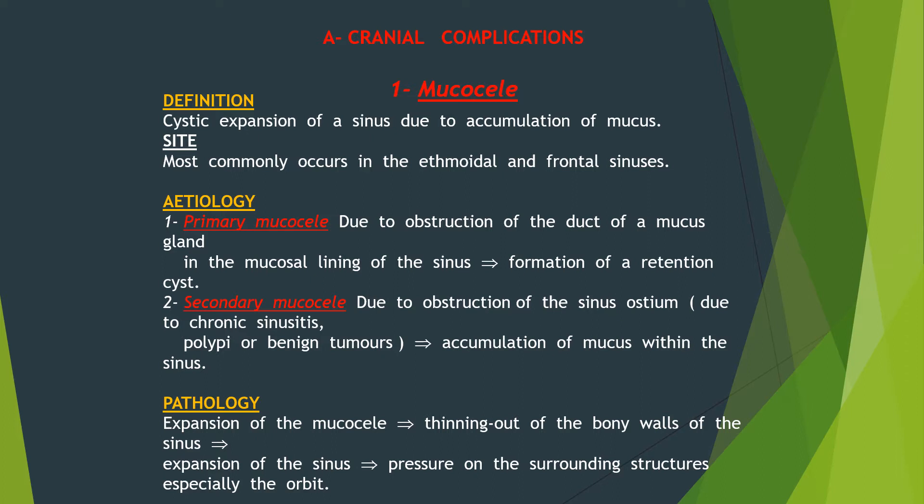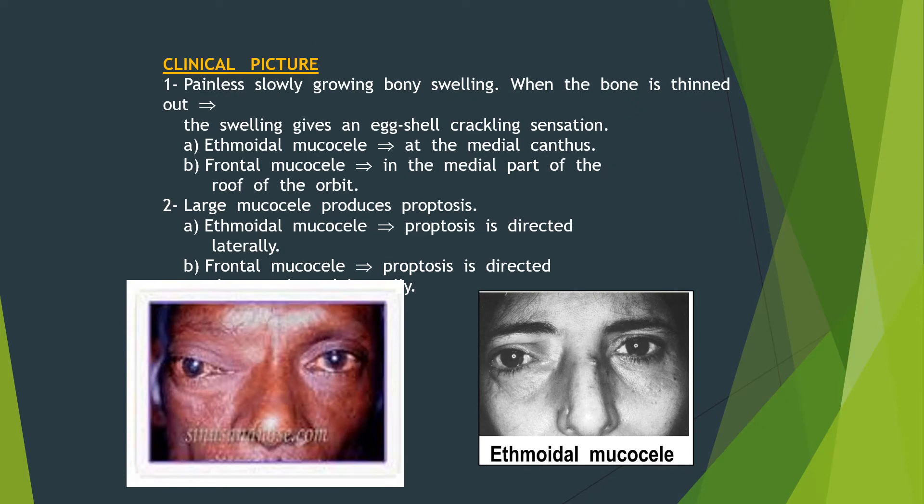Secondary mucocele may also result from polypi or benign tumors, leading to accumulation of mucus within the sinus. The expansion of the mucus will lead to thinning out of the bony walls of the sinus, expanding the sinus and causing pressure on the surrounding structures, especially the orbit, which is very close. The patient will show a painless, slowly growing bony swelling; when the bone is thinned out, the swelling gives an eggshell cracking sensation.